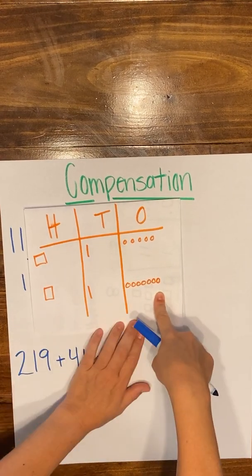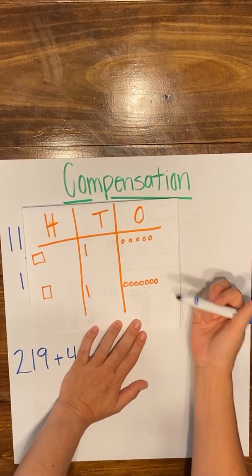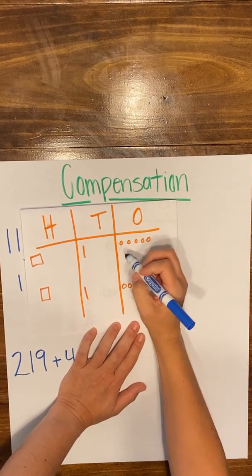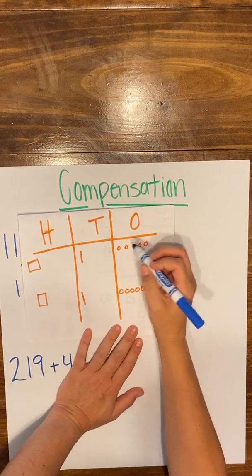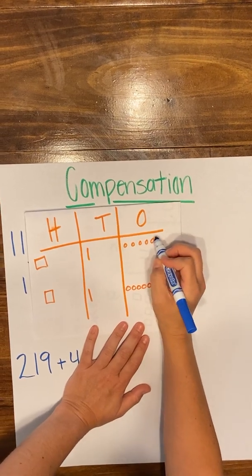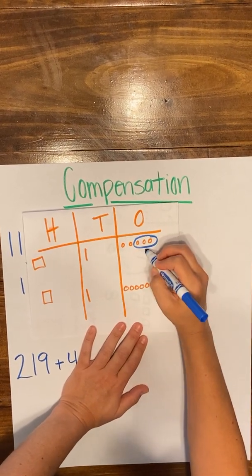So when I'm adding up this ones column, I'm going to get the same number of ones if my five stays the same or if I give those numbers down here. So if I take these three ones and I move them down here, it's going to give me the same number of ones.